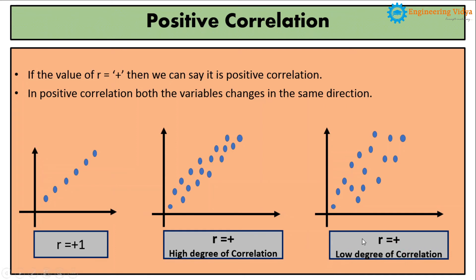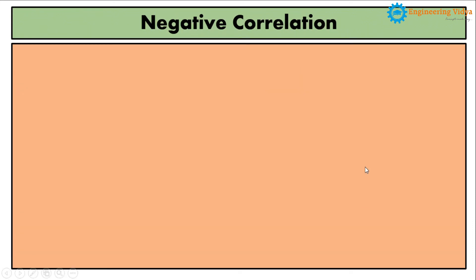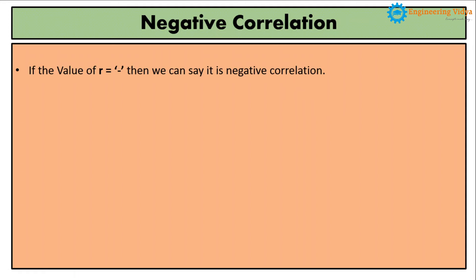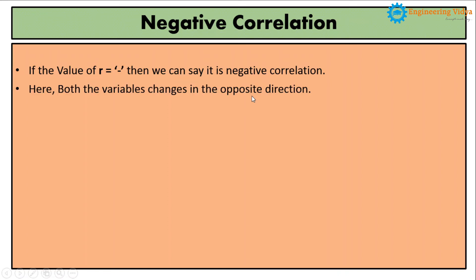This is all about positive correlation. Now the second type of correlation is negative correlation. The correlation is said to be negative if the calculation of small r gives a minus value. Small r is also called coefficient of correlation. If the coefficient of correlation gives a minus value, such correlation is called negative correlation. And always remember that if the correlation is negative, both variables will change in the opposite direction.